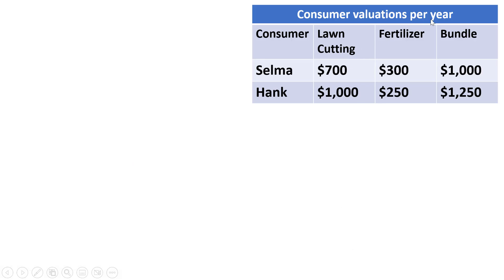Here we have a table showing the consumer valuations per year for lawn cutting and fertilizer. Selma, at most, is willing to pay $700 for lawn cutting and $300 for fertilizer. Together, she's willing to pay $1,000 for both of those services. Hank, on the other hand, is willing to pay $1,000 for lawn cutting at most and $250 at most for fertilizer. The bundle, then, is going to be valued at $1,250 for Hank.